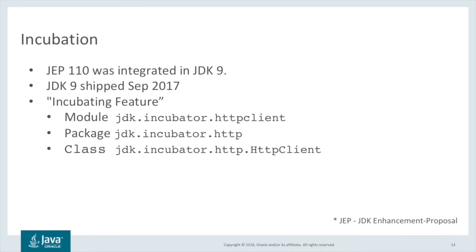JEP 110 was integrated in JDK 9, and JDK 9 shipped in September 2017. Java 9 brought a large language change in the form of the module system, and the Java runtime image is comprised of a set of modules. Alongside the module system, a new concept of incubating features was added. The HTTP client was added in JDK 9 as an incubating feature. A new incubator module named JDK Incubator HTTP Client was added, and that module exports a single package, JDK Incubator HTTP, that contains the complete HTTP API.